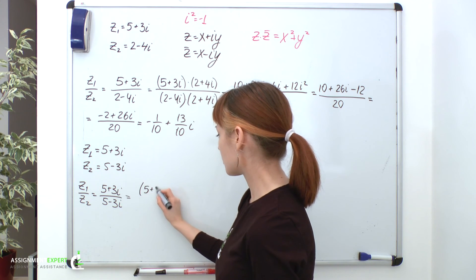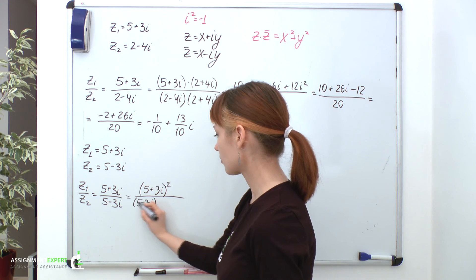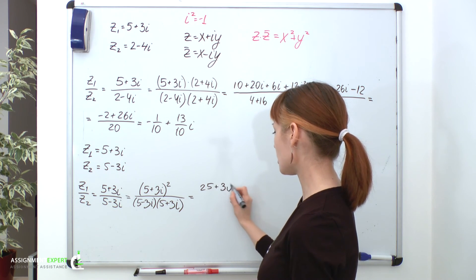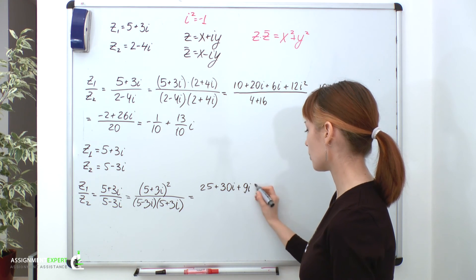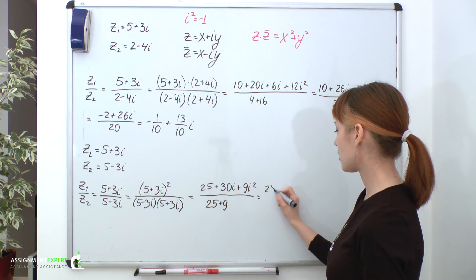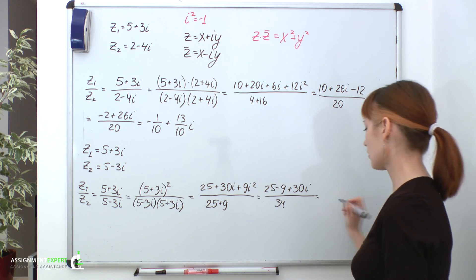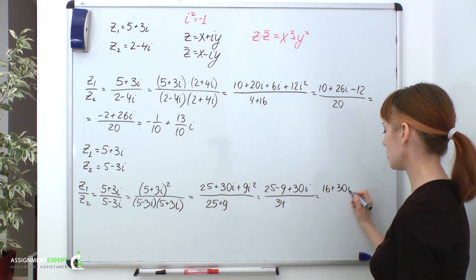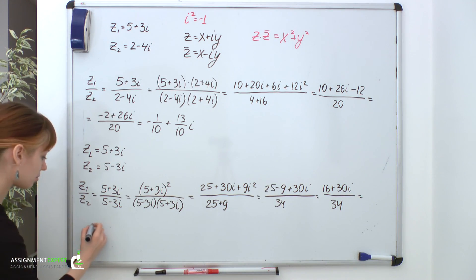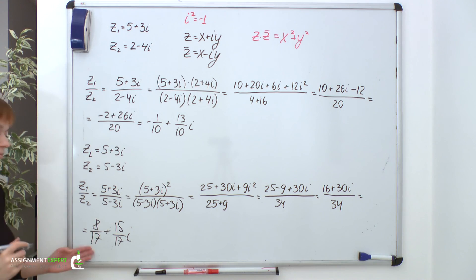That gives us 5 plus 3i squared over 5 minus 3i times 5 plus 3i which equals 25 plus 30i plus 9i squared over 25 plus 9 which equals 25 minus 9 plus 30i over 34 which equals 16 plus 30i over 34 and that gives us the answer which is 8 over 17 plus 15 over 17 i. So, as you can see nothing special about this case.